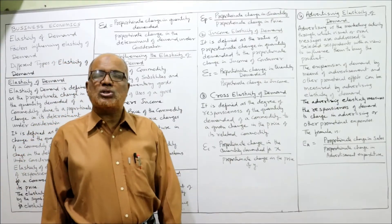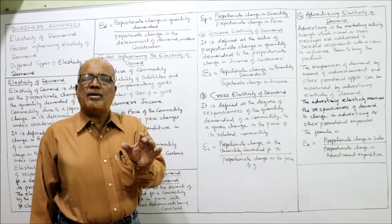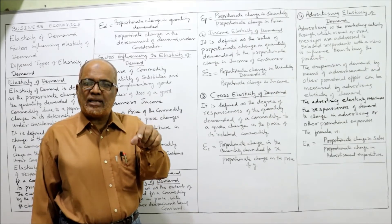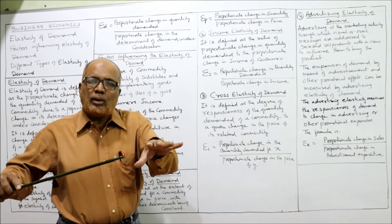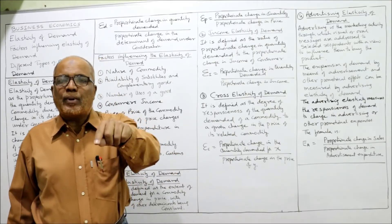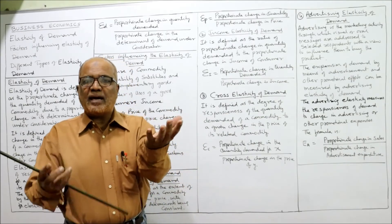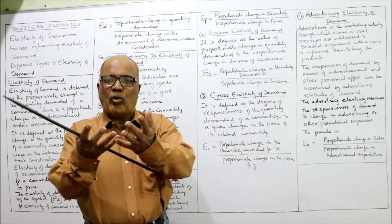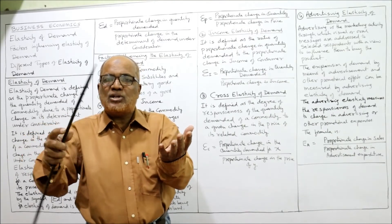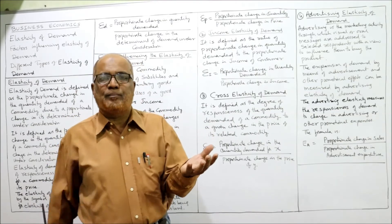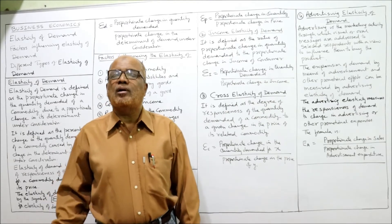The next type is cross elasticity of demand, which shows the proportionate change in the demand of a particular commodity due to a proportionate change in the price of a related commodity. For example, commodities X and Y: the proportionate change in demand for X due to a proportionate change in the price of Y. Substitutes and complementary goods are called related goods.